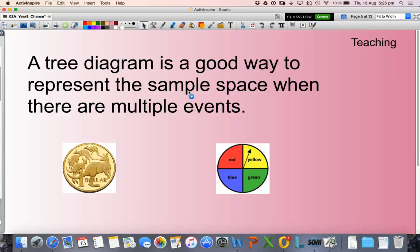A sample space is a list of all the different outcomes. In other words, a list of all the different results that we can have.